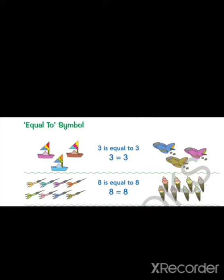Another example is we have 8 rockets on the left hand side and 8 ice creams on the right hand side. 8 is equal to 8 and we will write it as 8 is equal to 8.